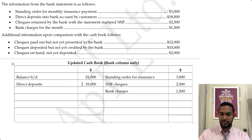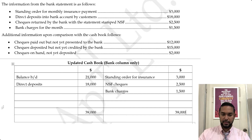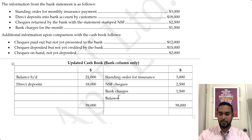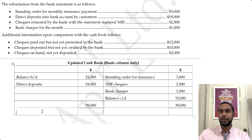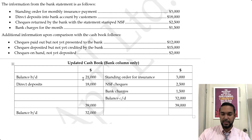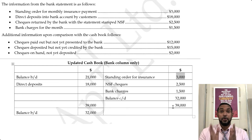The debit side totals $39,000. The credit side totals $7,000 — that's $2,500 plus $1,500 plus $3,000. Balance carried down gives us $32,000. Let me check: 21 plus 18 is 39; 25 plus 15 is 4,000; 4,000 plus 3,000 is $7,000; $39,000 minus $7,000 is $32,000. Good. Balance brought down: $32,000. Always check over your work — don't take things for granted.